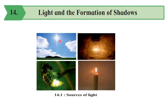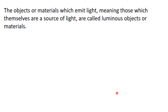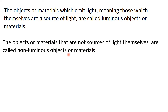Sun and firefly are natural sources of light. Opposite to that, electric bulb and wax candle are man-made sources of light. Let us revise those points once again. Objects or materials which emit light — they themselves are a source of light. Such objects are called luminous objects or luminous materials. Opposite to that, materials which do not emit light are called non-luminous objects or non-luminous materials.